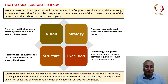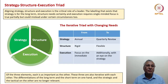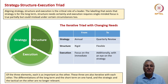Within these four, while vision may be reviewed and reconfirmed every year, directionally it is unlikely to change every year except when the environment offers multiple discontinuities. In contrast, strategy, structure and execution constitute the core triad on which leaders must place great emphasis. The strategy-structure-execution triad is critical to the role of a leader. Vision quickly transforms itself into a strategy, and strategy, structure and execution are the frameworks available to leaders and employees to achieve results.